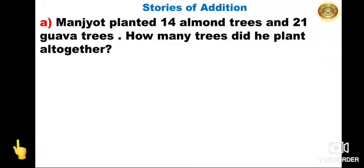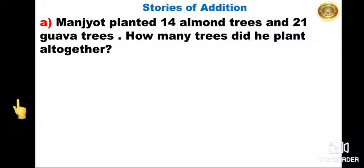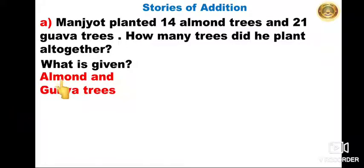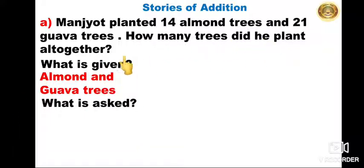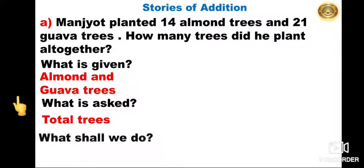First we have to read the information given here. Manjot planted 14 almond trees and 21 guava trees. How many trees did he plant all together? We have to read the information carefully and then write what is given. What is given here? Almond trees and guava trees. So we will write: almond trees and guava trees. What is asked? How many trees did he plant all together? They have asked the total number of trees. For finding the number of trees all together, we will add. So for adding, we will make a table.